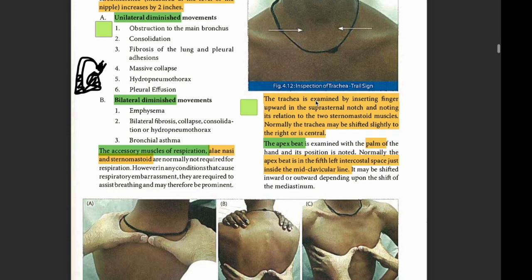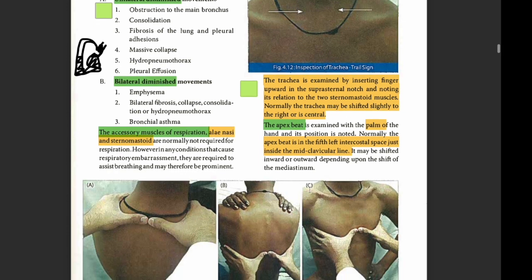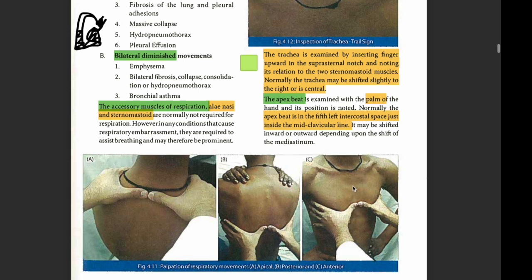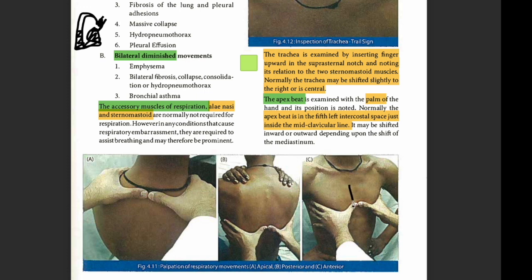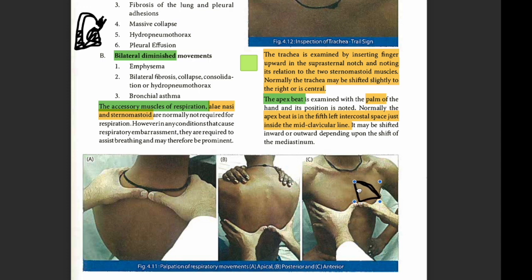Another way to check the mediastinum is the apex beat. Normally, the apex beat is in the mid-clavicular line in the fifth intercostal space, just medial to the mid-clavicular line. If the mediastinum is shifted to the right, it will drag the apex to the right. If the mediastinum is shifted to the left — because the lung on the right is pushing it or the lung on the left is pulling it — then the apex beat will be shifted to the left.